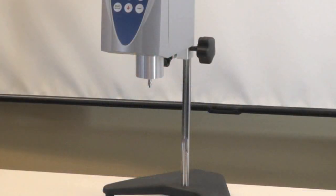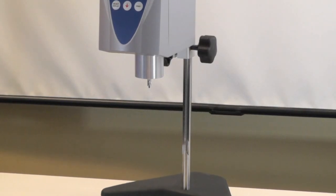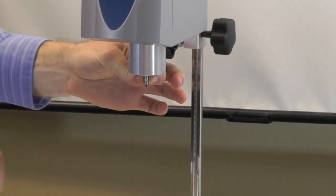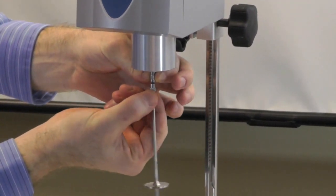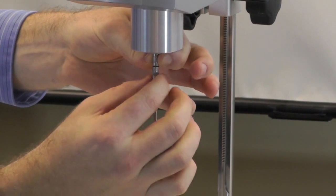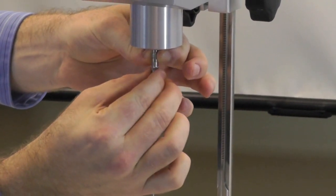Traditionally, in order to attach a spindle or chuck assembly to your viscometer, you would need to carefully lift up on the coupling nut with one hand, find the left-handed thread with the other hand, and screw on the spindle while keeping the coupling nut elevated.